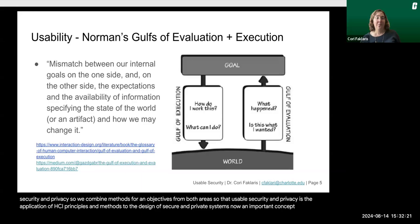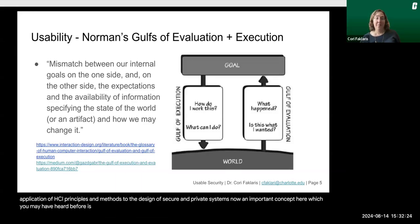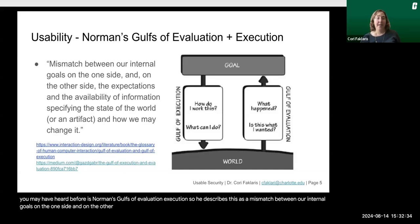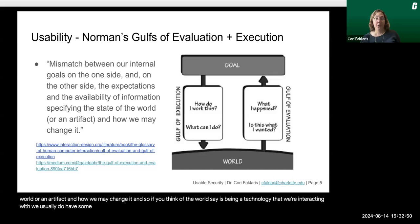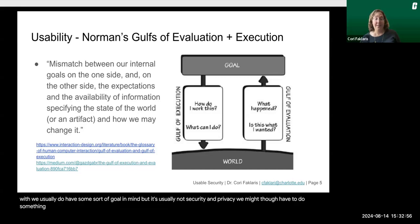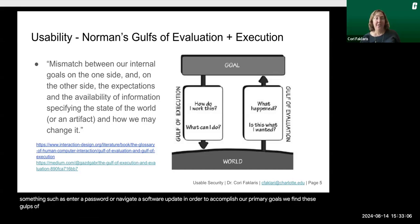An important concept here, which you may have heard before, is Norman's gulfs of evaluation and execution. He describes this as a mismatch between our internal goals on the one side, and on the other side, the expectations and availability of information specifying the state of the world or an artifact, and how we may change it. If you think of the world as a technology we're interacting with, we usually have some sort of goal in mind, but it's usually not security and privacy. We might have to enter a password or navigate a software update to accomplish our primary goals, and we find these gulfs of evaluation and execution all the time.